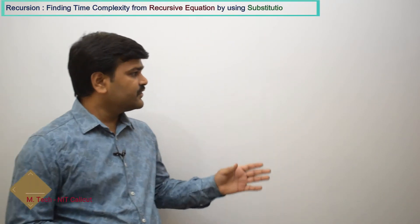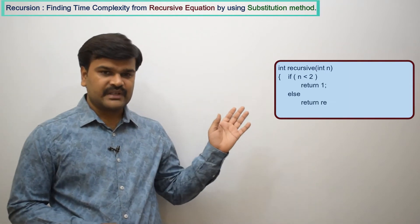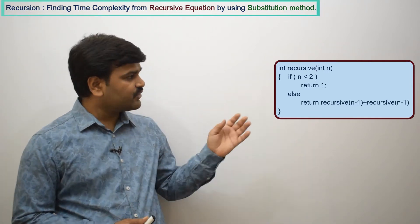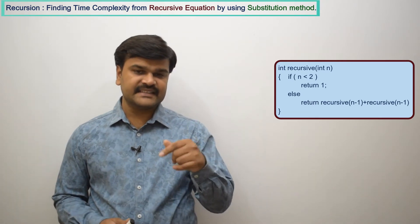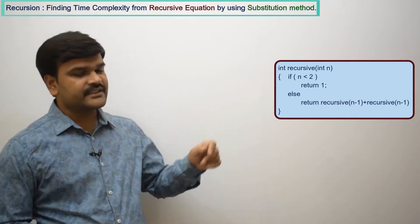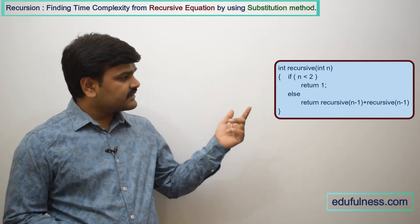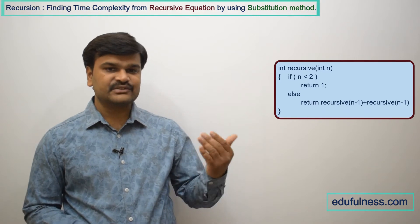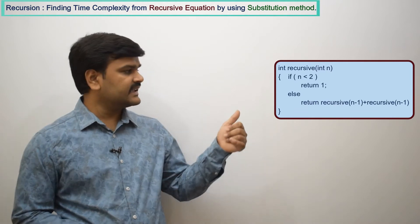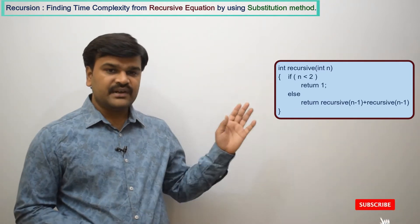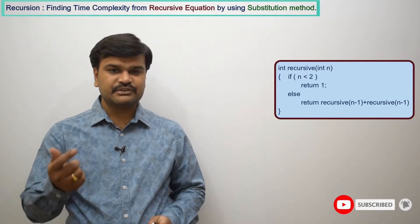Now let us see one more example of finding the time complexity for recursive code by using the substitution method. Here if you take this code, this is also one of the recursive codes for which we have to find out the time complexity. If n is less than 2, we are going to return 1. Otherwise, we are calling recursive(n-1) plus recursive(n-1) — the same thing called 2 times — and that result we are adding and returning. For this, first of all let us try to find out the recursive equation.